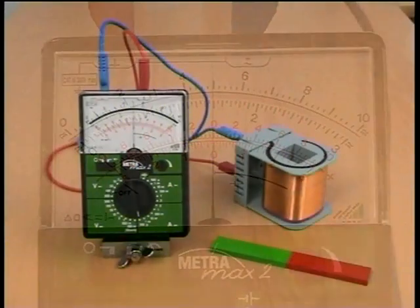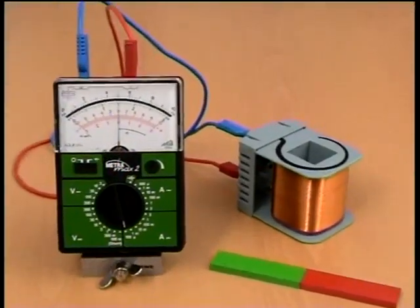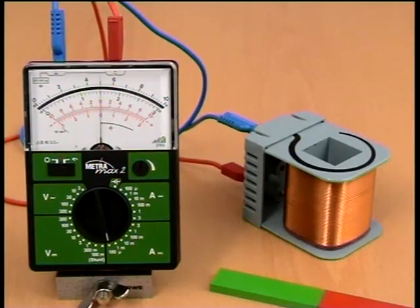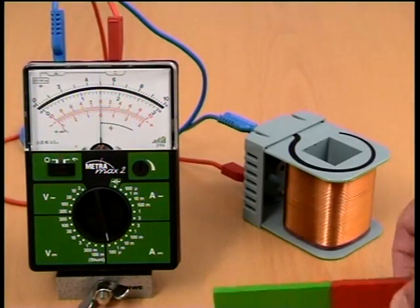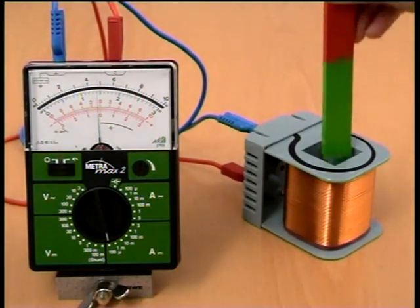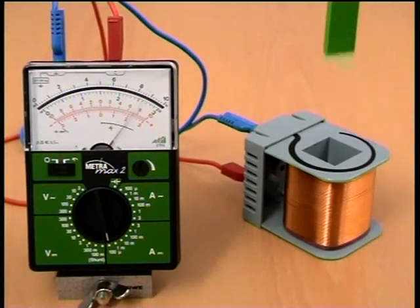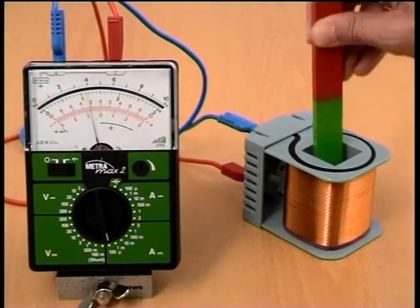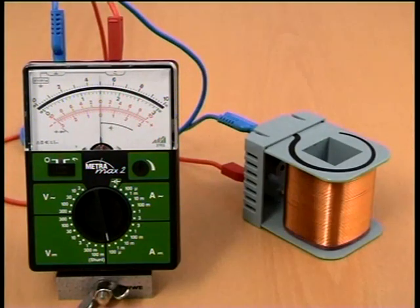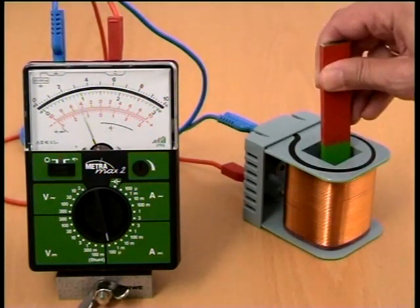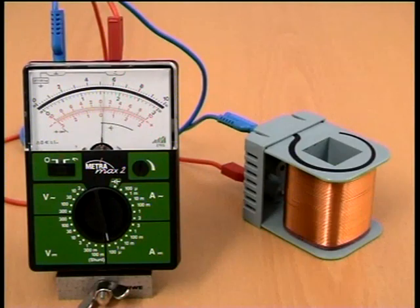Veamos cómo es posible generar una fuerza electromotriz inducida y por tanto una corriente inducida. Cogemos el imán y lo acercamos y alejamos de la bobina, introduciéndolo y sacándolo de ésta. Se observa en el amperímetro cómo se induce una corriente eléctrica cuyo sentido cambia si se acerca o se aleja el imán.